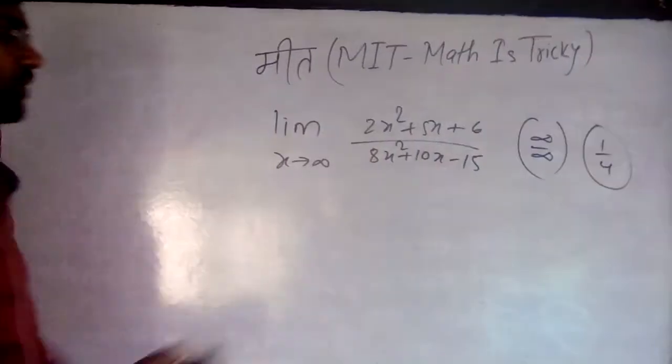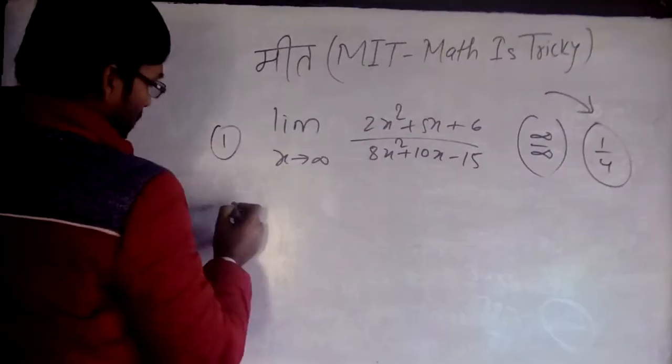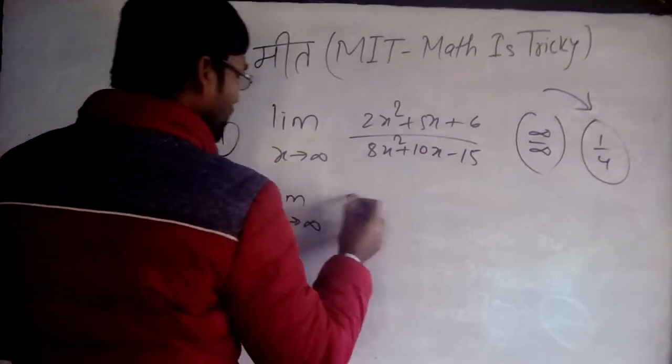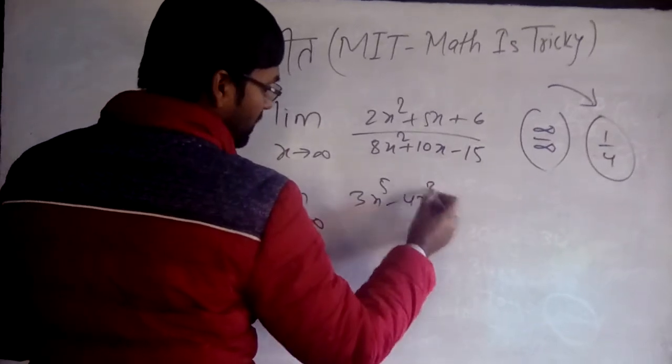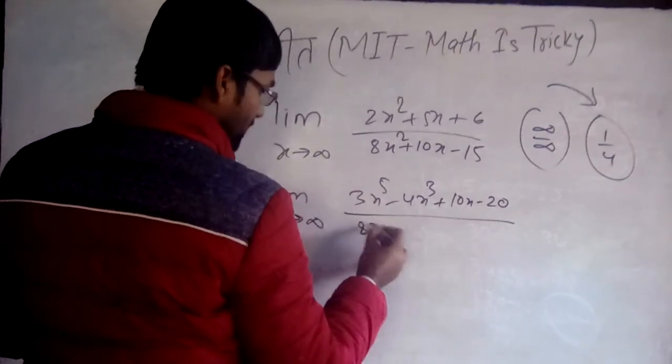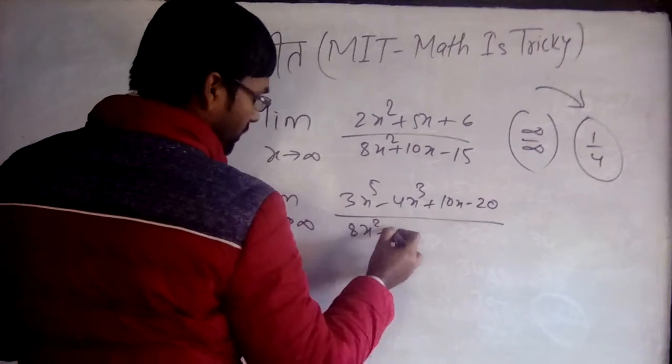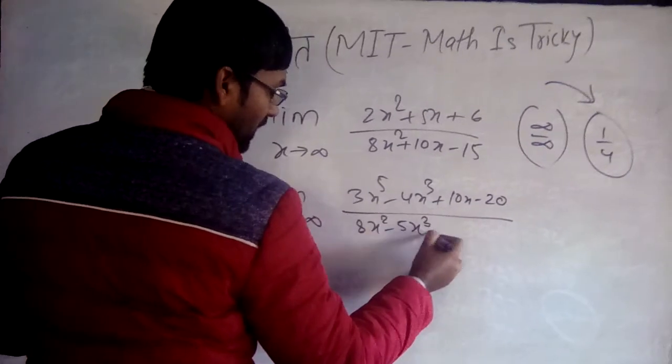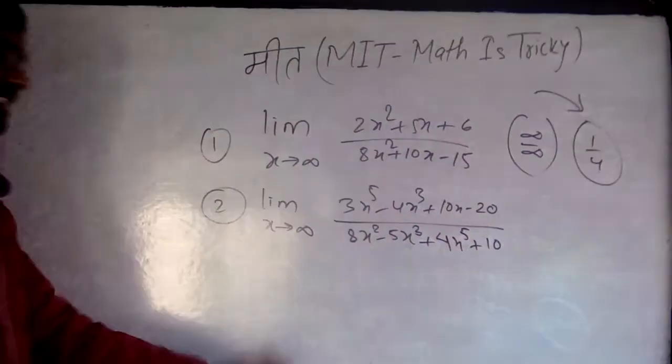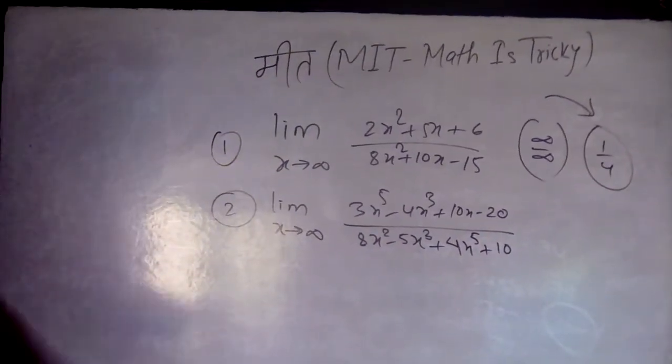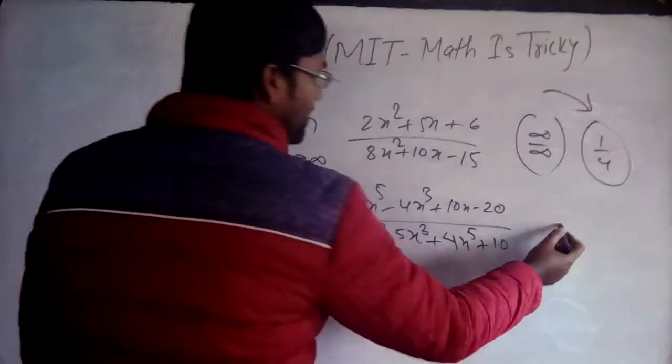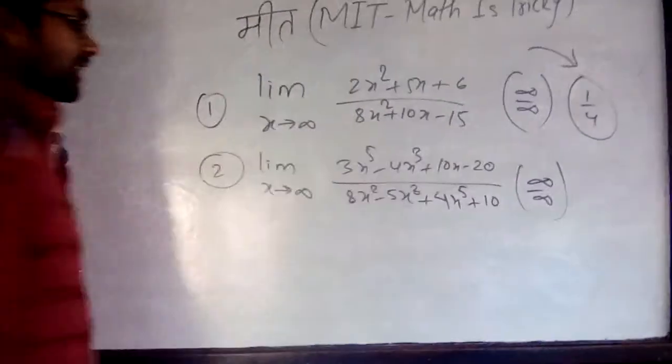Let's start the next question. Suppose the equation is limit x tends to infinity: (3x⁵ - 4x³ + 10x - 20)/(8x² - 5x³ + 4x⁵ + 10). In this case also, if you try to solve by the process method, it will take minimum 2 or 3 minutes. But you don't have to. According to this trick, the answer will be simply 3/4.